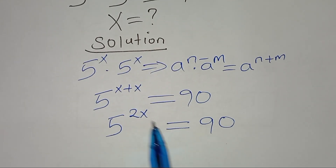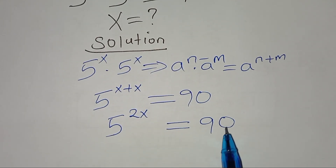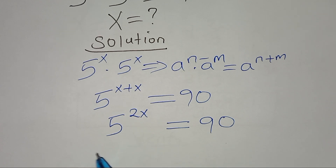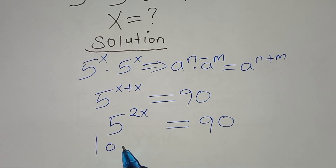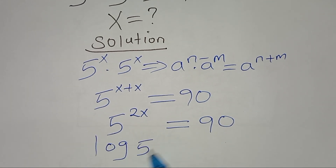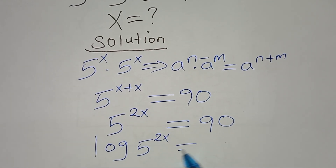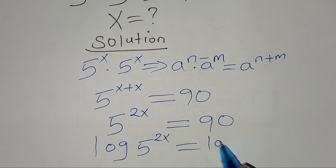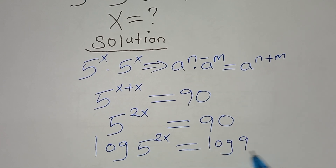Now, to solve for the value of x here, we introduce the natural logarithm on both sides, so we have log of 5 to the power 2x, this is equal to log 90.